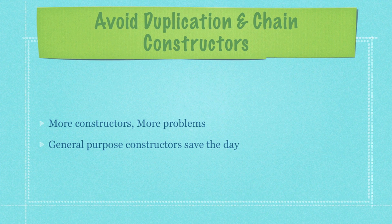Another problem is avoiding duplication inside constructors — solved by chaining constructors. The more constructors you have, the more likely someone will update one and forget to update the others, causing catastrophic problems. This is solved by having a few constructors that always call a general purpose constructor, eliminating all the duplication from assigning values to fields. Let's jump back in and look at some more code.